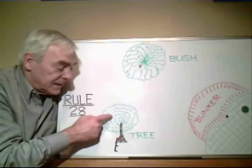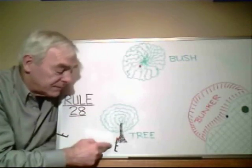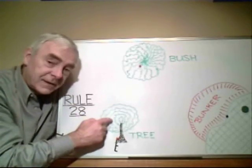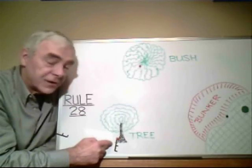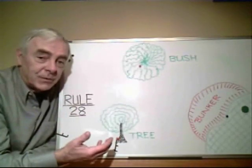If his ball is in the tree, he has the same relief. He can take relief from the point underneath where his ball is at rest in the tree, providing he can identify his ball.